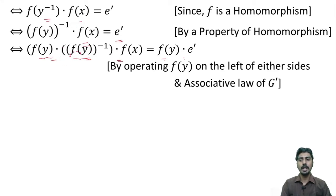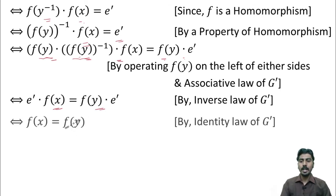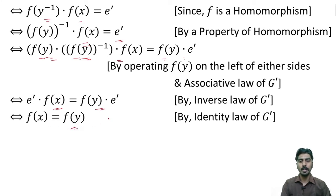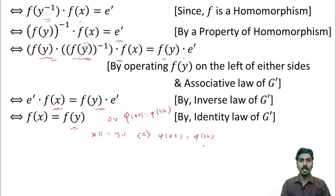By the inverse law of G dash, this product is equal to e dash. So, I have e dash into f of x is equal to f of y into e dash. Now, by the identity law of G dash, we have f of x equal to f of y, or phi of xK equal to phi of yK. We started at xK equal to yK. We have shown that xK equal to yK if and only if phi of xK equal to phi of yK.